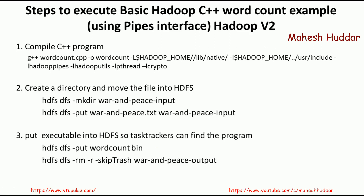Before executing the program in the HDFS cluster, we need to check whether the output directory already exists. If it is already present, we need to remove it using: hdfs dfs -rm -r with skip-trash, to permanently delete the directory. If it is a new output directory there is no issue, but if it already exists in the HDFS cluster, it must be removed.